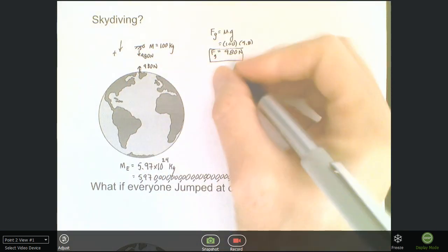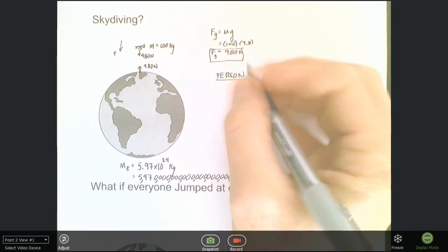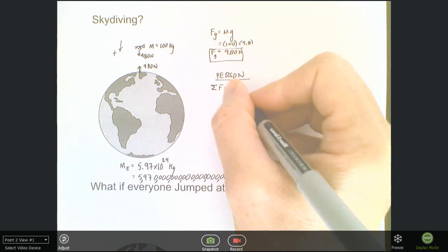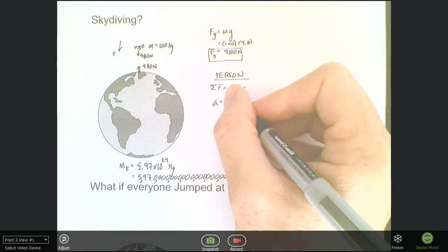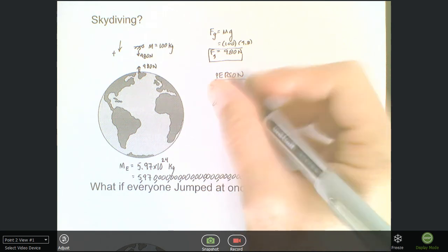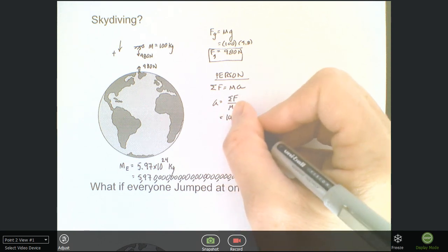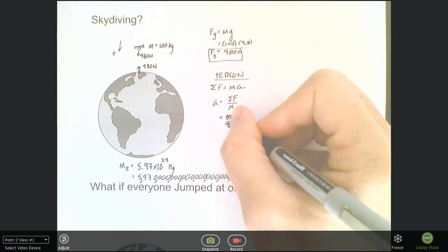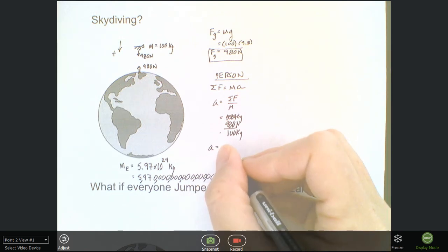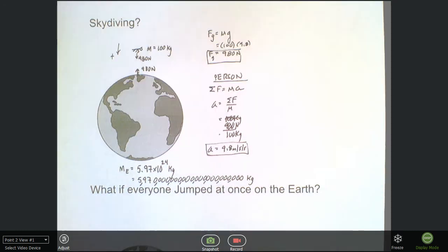So if we look at the person, for instance, and we say, well, what's their acceleration? The acceleration of the person is the net force acting on the object. We're going to assume no air resistance and all that. So it's 980 newtons divided by 100 kilograms. So the acceleration is 9.8 meters per second per second, approximately, which is what we knew it would be.